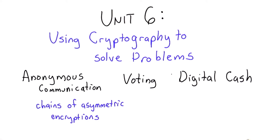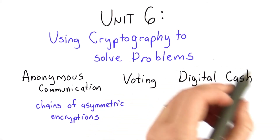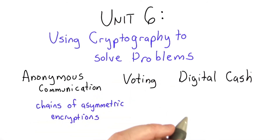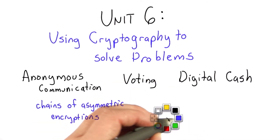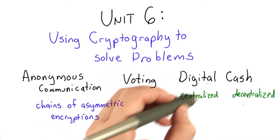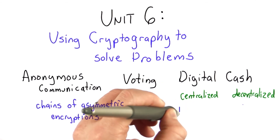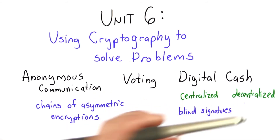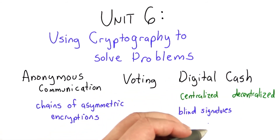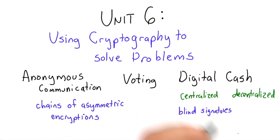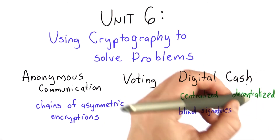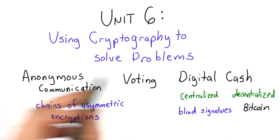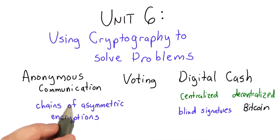Then we'll look at ways to provide digital cash, a way to represent and transfer value similar to paper cash, that can be done all with cryptography. This will involve introducing some new techniques. We'll look at a centralized way of doing that, which can be done using a new technique called blind signatures, and we'll also look at a decentralized way of doing that that doesn't require any trusted authority, but uses proofs of work to create value — and this is what the Bitcoin network does. This is just a small sampling of the kinds of things that you can do using cryptography.